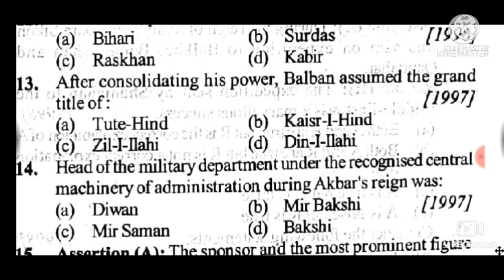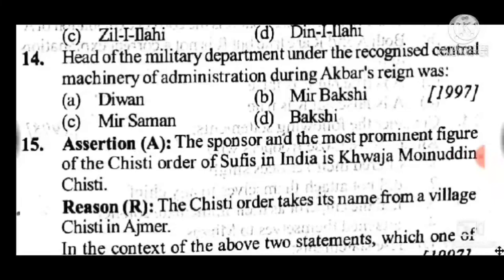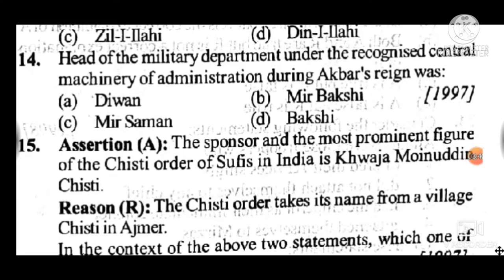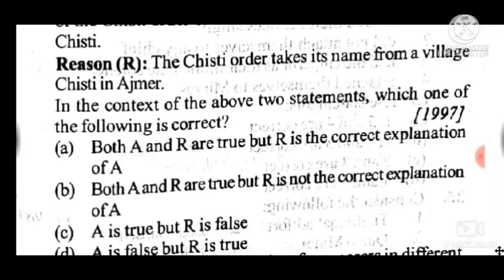Question 15: Assertion — the founder and most prominent figure of the Chishti order of Sufis in India is Khwaja Moinuddin Chishti. Reason — the Chishti order takes its name from a village Chishti in Ajmer. Answer is C — A is true but R is false. The Chishti order does not take its name from a village in Ajmer; that assumption is false.